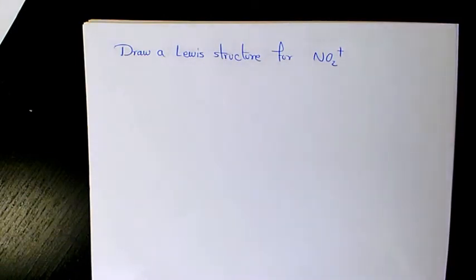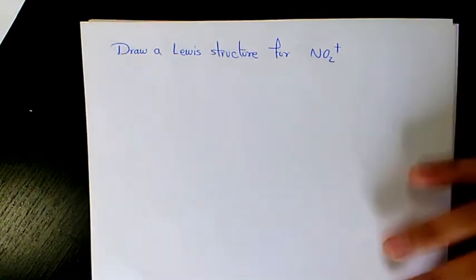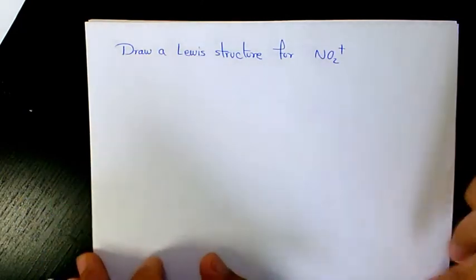What's up guys, this is Massey, welcome to another video. In this video I want to show you how to draw a Lewis structure for NO2 plus, or this is called nitronium ion. So what we need to do right from the beginning, we need to find out the bonding capacity of each of these elements.